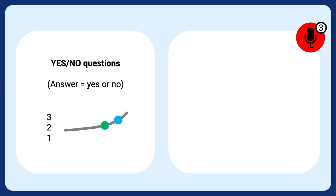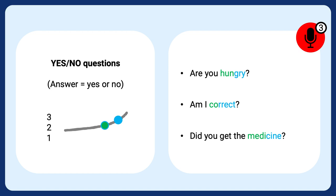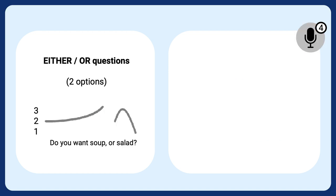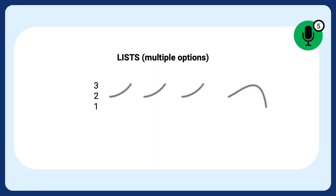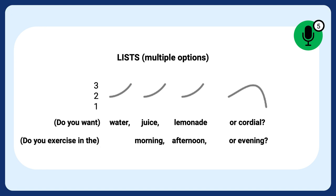If you're asking a yes/no question, notice the rising intonation: 'Are you hungry?', 'Am I correct?', 'Did you get the medicine?' If you're asking either/or questions, notice the rising and then falling intonation: 'Would you like tea or coffee?', 'Do you agree or disagree?', 'Do you work, or are you a student?' And if you're giving lists, notice the rising, rising, rising and then falling intonation: 'Do you want water, juice, lemonade or cordial?', 'Do you exercise in the morning, afternoon or evening?'